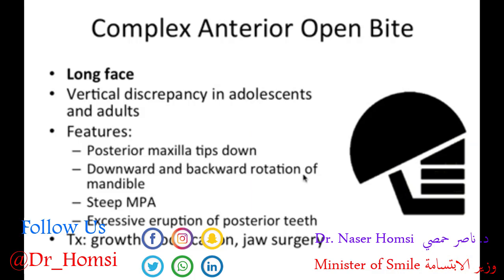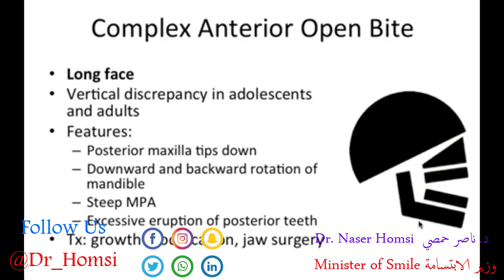What happens in this skeletal discrepancy? We have the posterior maxilla tipping down and the downward and backward rotation of the mandible. You can notice this steep mandibular plane angle, and you get excessive eruption of the posterior teeth, which creates a huge open gap in the anterior region of the mouth — that's our complex anterior open bite.